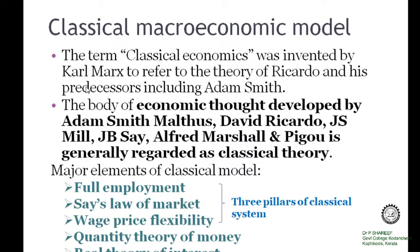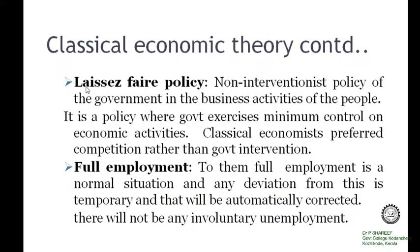The major elements of classical theory are full employment equilibrium, Say's Law of Market, wage-price flexibility, quantity theory of money, and real theory of interest. Among them, the first three elements — full employment equilibrium, Say's Law of Market, and wage-price flexibility — are regarded as the three pillars of the classical system.